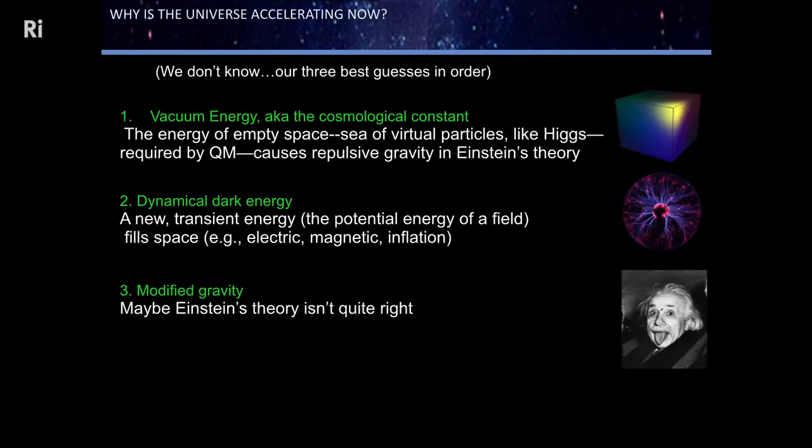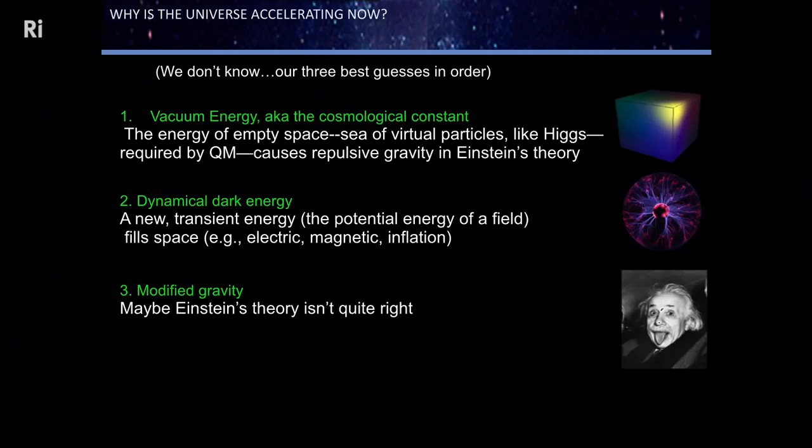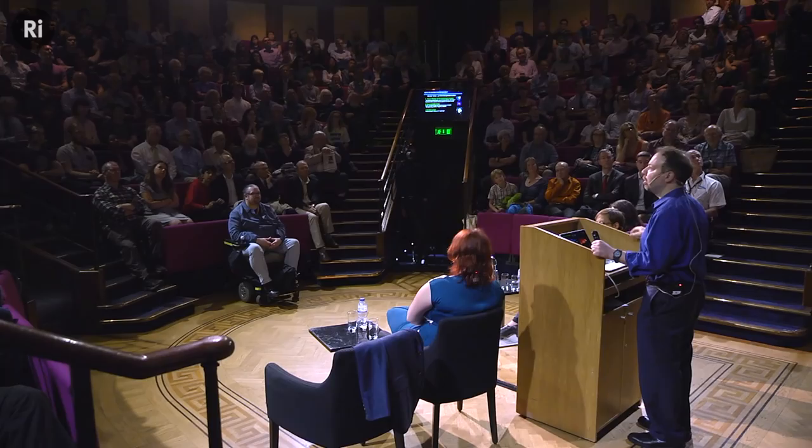There is another possibility: a transient form of dark energy related to a field like the electric or magnetic field. We think there was a field like this early in the history of the universe called inflation that caused an accelerated period of expansion—so it may be that these arise from time to time. Or—perhaps the most intriguing possibility—we don't really have the right theory of gravity. Newton thought he had the right theory of gravity until certain anomalies arose, and Einstein came along with a deeper understanding. We have to keep our eyes open for the possibility that this is not the right theory of gravity.